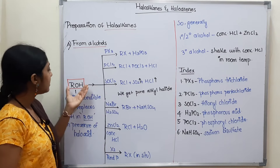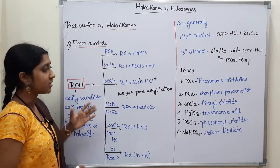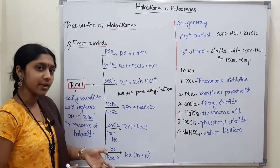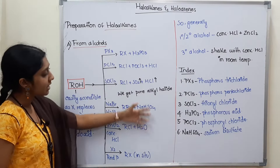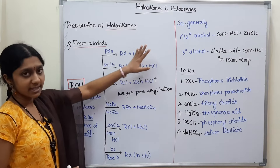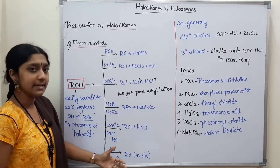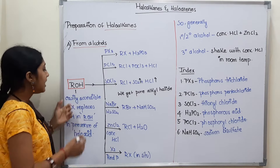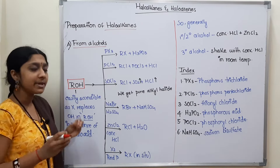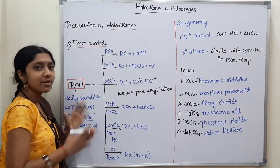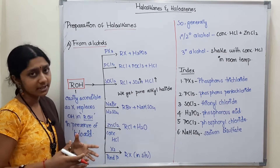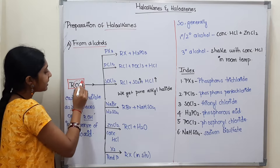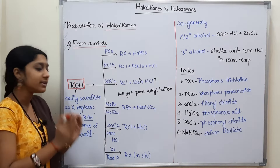How do we prepare haloalkanes? If we have different types of reaction conditions, we will prepare different products. The first method uses alcohol — ROH. Alcohol is easily accessible, so this method is very easy. This method is called the alcohol method for preparation of haloalkanes.